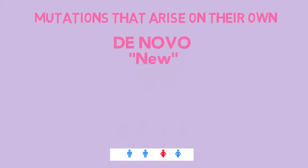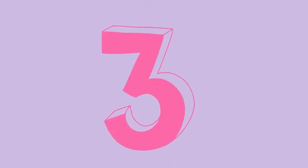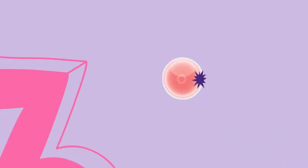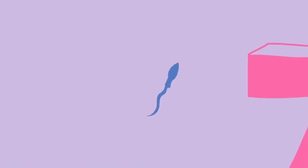De novo mutations can arise in three different places in development: in the mother's egg, the father's sperm, or the fertilized embryonic cells.